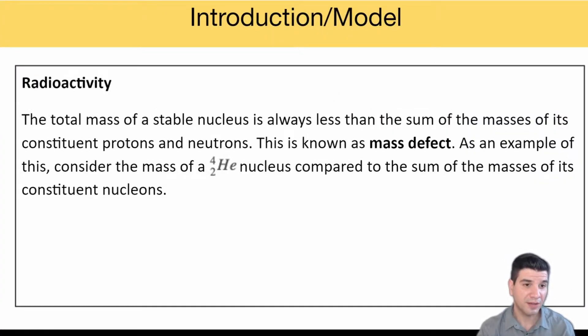One key concept to understand is known as mass defect. The total mass of a stable nucleus will always be less than the sum of the masses. Atoms are made of protons, neutrons, and electrons. If you added up the mass of each one individually, you would not get the total atomic mass of that stable atom.